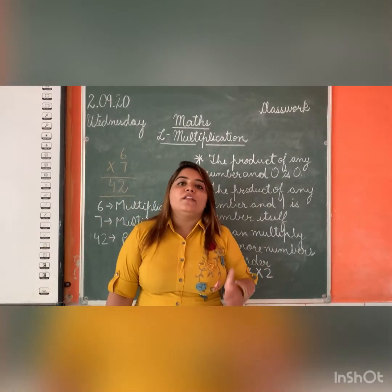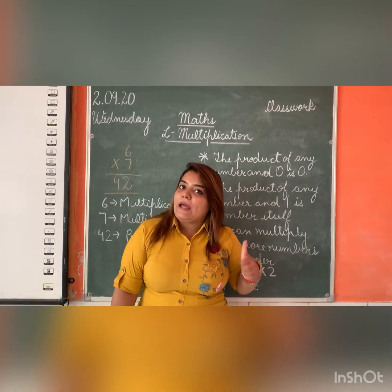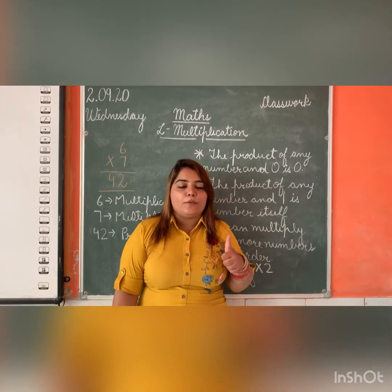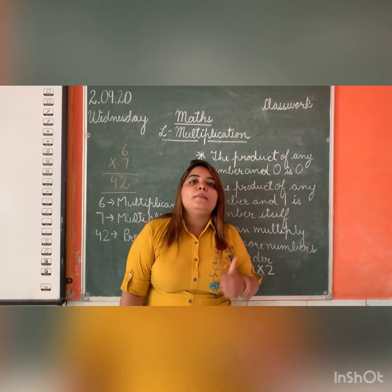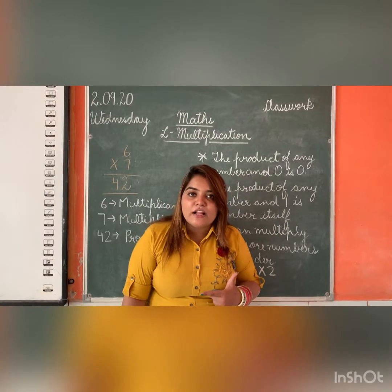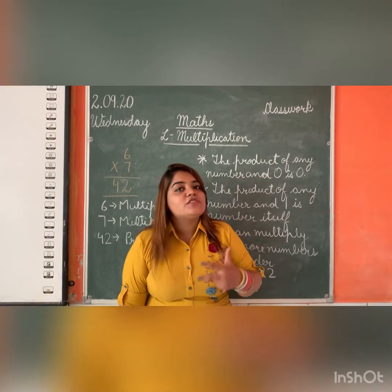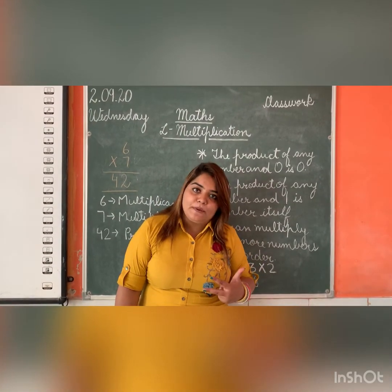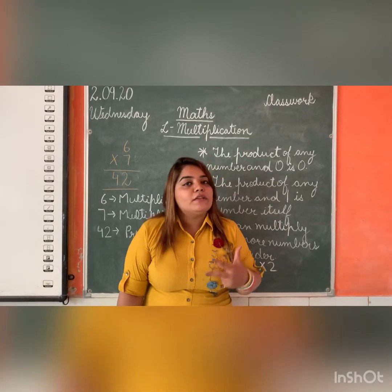So once again, let us revise. If we multiply any number by 0, we get the product 0. Whenever we multiply any number by 1, we get the number itself. And we can change the order of the numbers when we multiply — the product will still be the same.